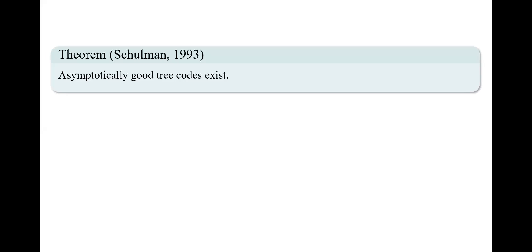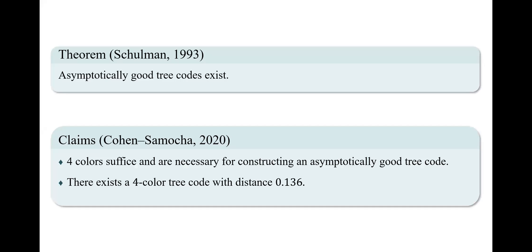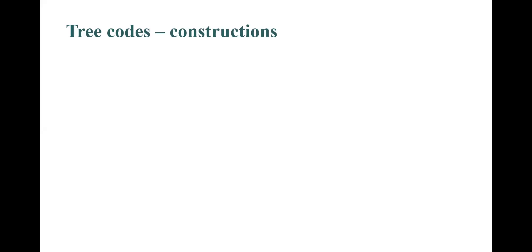As part of his seminal work in 1993, Schulman proved that asymptotically good tree codes exist, but his proof does not provide an explicit construction. Surprisingly, the number of colors that are required for this task is very small. It was proved by Cohen and Samoha that four colors suffice and are necessary for constructing an asymptotically good tree code. Moreover, they proved the existence of four colored tree codes with a non-vanishing distance.